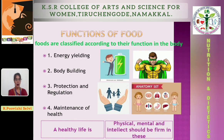Next, I will move on to the functions of food. Foods are classified according to their functions and the parts and organs of the body they support. The first function is energy yielding. Energy-yielding foods are high in carbohydrates, fat, and protein. One gram of carbohydrate gives 4 kilocalories, and one gram of protein gives 4 kilocalories.